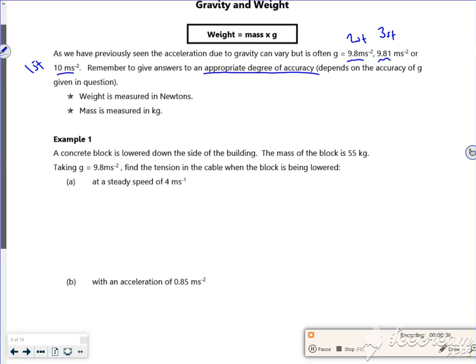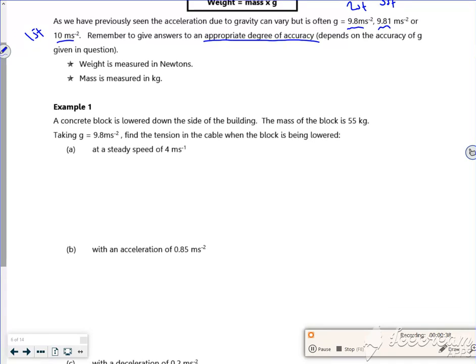A concrete block is lowered down the side of a building. The mass of the block is 55 kilograms. So I've got this block being lowered down with mass 55g. There's tension in whatever is holding it. It's travelling down the side, so acceleration is taken as positive down.